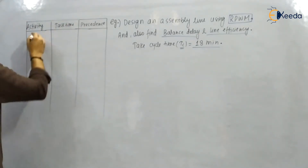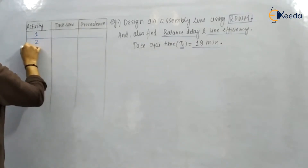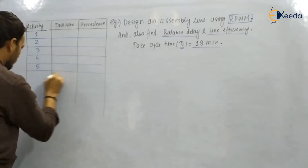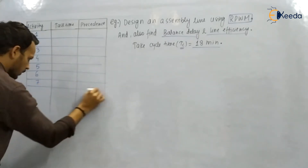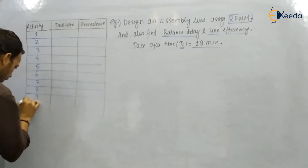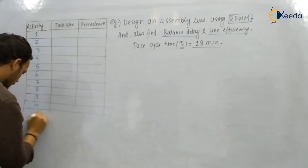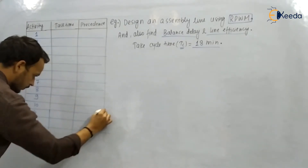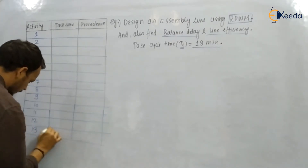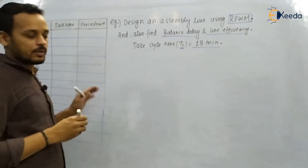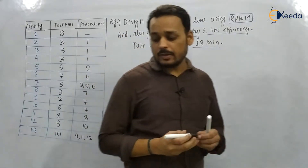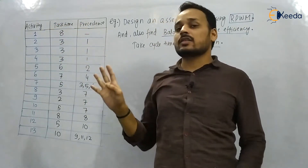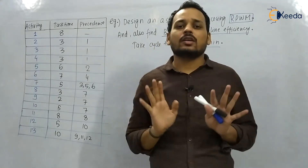There are 13 activities given: 1 through 13, each with their task time and precedence. We have been told to design the assembly line using the Ranked Position Weight Method. First, we have to draw the network diagram — an Activity-on-Node (AON) diagram — since in assembly line balancing we use the AON network diagram.